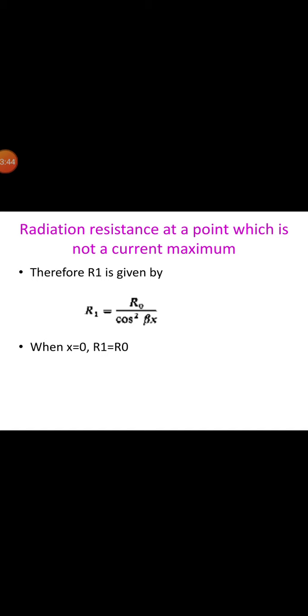Therefore, R_1 = R_0 / cos²(β*x). When x = 0, R_1 = R_0; but when x = λ/4, R_1 = infinity if R_0 ≠ 0. However, the radiation resistance measured at the current minimum x = λ/4 is not actually infinite, since an actual antenna is not very thin and the current at a minimum point is not truly zero. In practice, the radiation resistance at a current minimum may be very large, for example thousands of ohms.